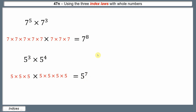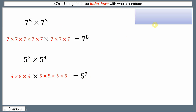To write this down as a rule we need a bit of algebra. We can write: n to the power of a — where n is 7 and a is 5 — times n to the power of b — where n is 7 and b is 3 — equals n to the power of a plus b. So the two powers get added together. As a reminder: when multiplying two numbers to different powers, add the powers.